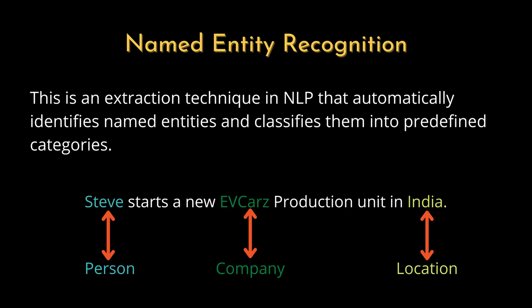Named Entity Recognition: Named entity recognition, also known as named entity identification or named entity extraction, is an NLP technique that automatically identifies named entities and classifies them into predefined categories. It is mainly used to extract key information from text and identify its content. Entities can be people, organizations, locations, time, quantities, percentages, and more. For example, in the sentence 'Steve starts a new EV car production unit in India,' Steve is referred to as a person, EV car is a company, and India is a location.